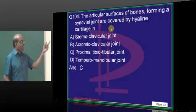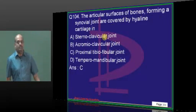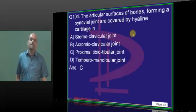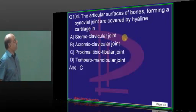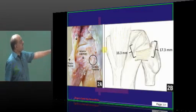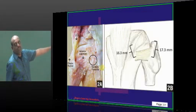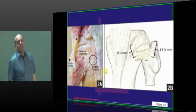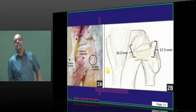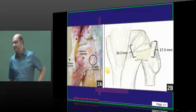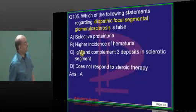Synovial joint covered by hyaline cartilage — classical of the proximal tibiofibular joint — recognized by this very important feature.